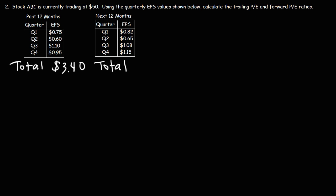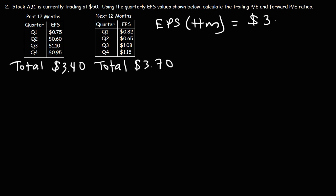For the next 12 months, we add $0.82 plus $0.65 plus $1.08 plus $1.15, giving us a total of $3.70. So the EPS for the trailing 12 months — last year — is $3.40, and the EPS for the next year is $3.70.